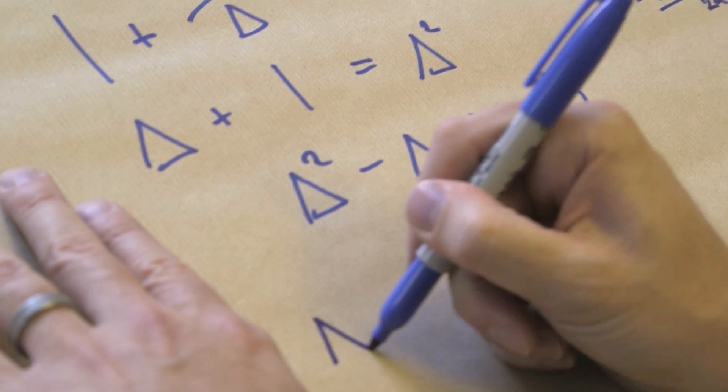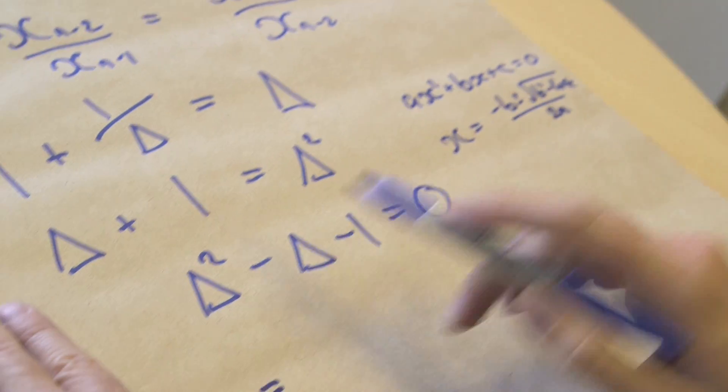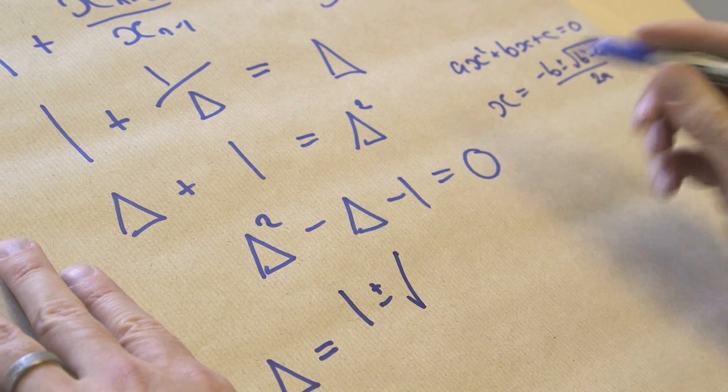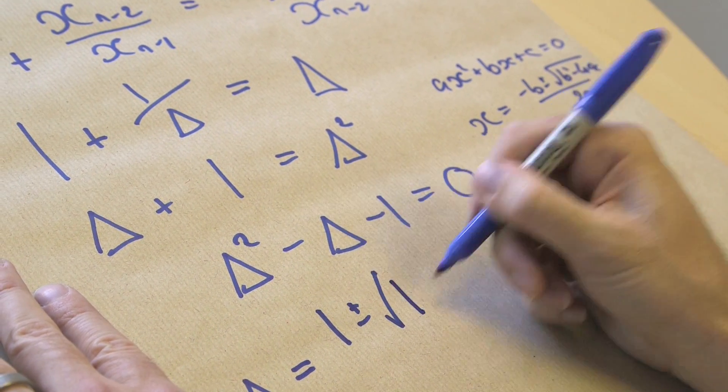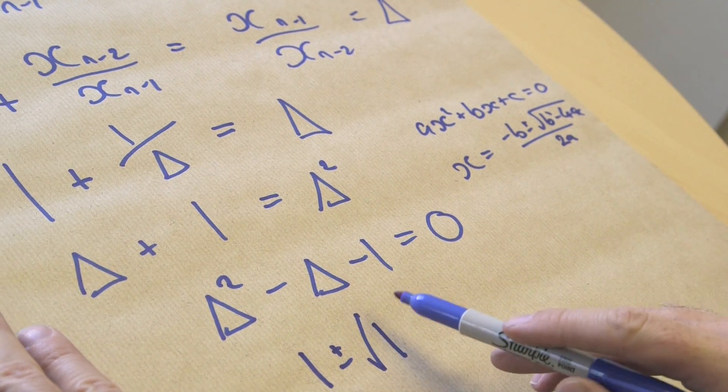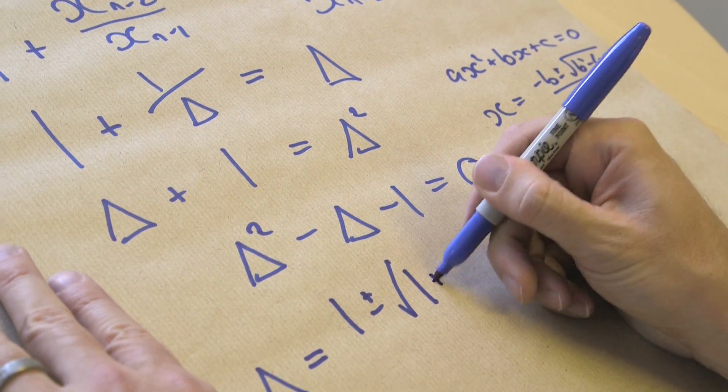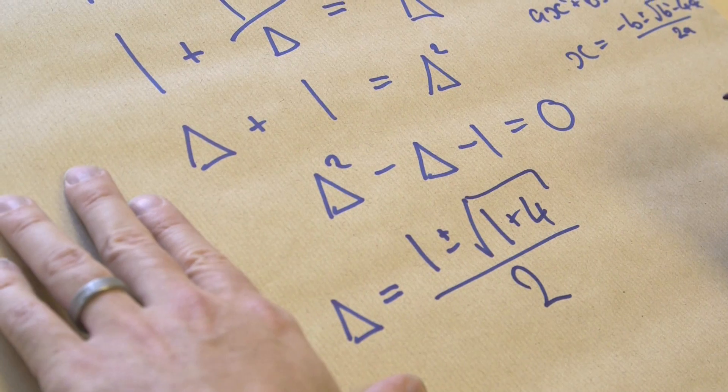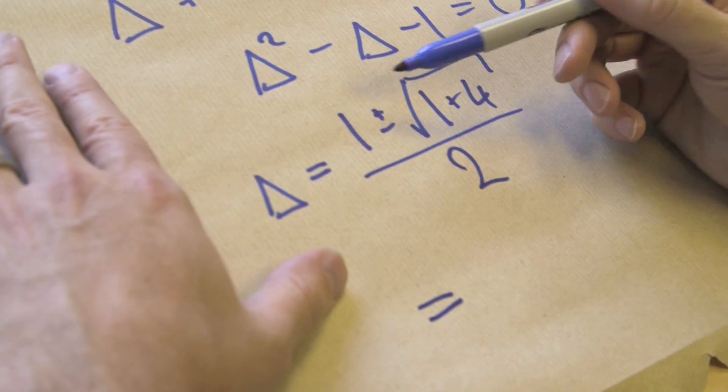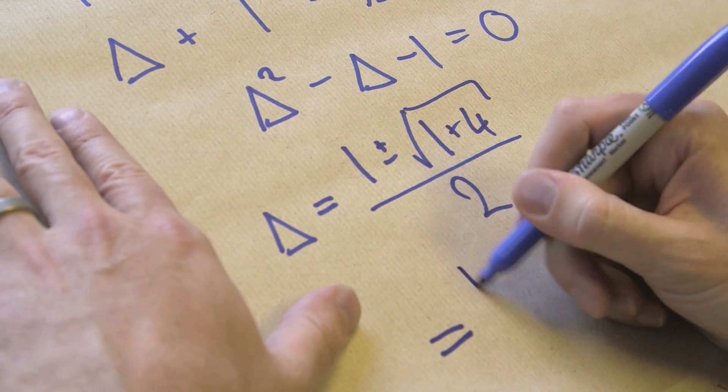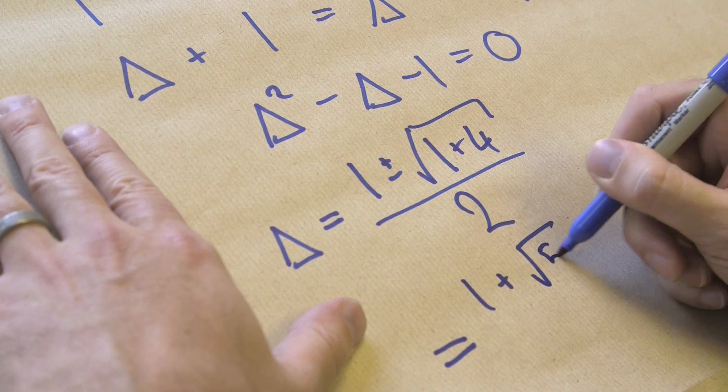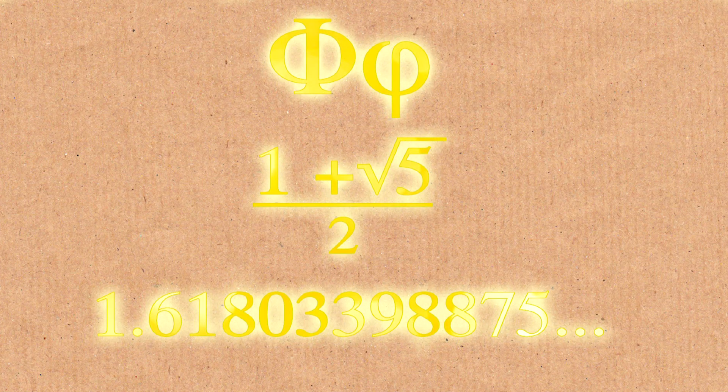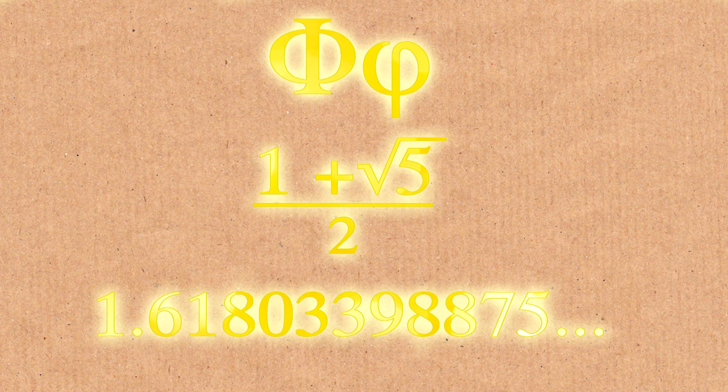So we now know delta equals negative b, which is the coefficient there, which will be 1 plus or minus the square root of b squared is going to be 1 minus 4 times 1 times negative 1. So that's going to be plus 4. 2 times 1 is 2. So that's going to equal, now I'm only going to use the positive for now, 1 plus root 5 divided by 2, which is the golden ratio. If you actually work that out, that's where 1.6180 blah comes from.